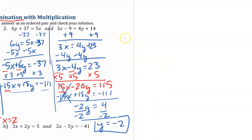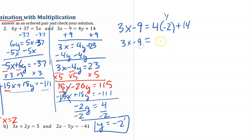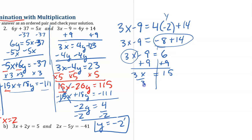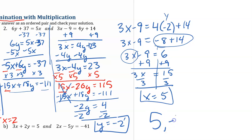Now I need to take one of the original equations and substitute back in the value negative 2 for y. So 3x minus 9 equals 4 times negative 2, my y, plus 14. 3x minus 9 equals negative 8 plus 14. I can combine those terms: 3x minus 9 equals 6. I'll add 9 to each side. 3x equals 15. Divide both sides by 3, so x equals 5. My solution is 5 comma negative 2.